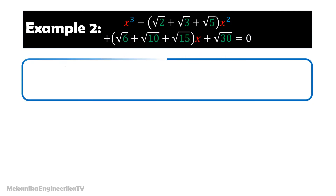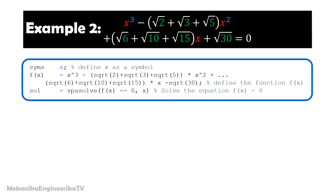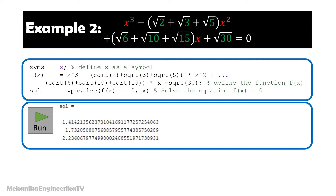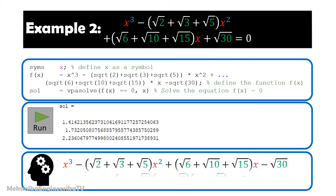As a second example, we are going to solve the cubic equation shown here. The code is almost the same, except for the definition of f(x). Here f(x) equals x cubed minus (square root of 2 plus square root of 3 plus square root of 5) times x squared, plus (square root of 6 plus square root of 10 plus square root of 15) times x, minus square root of 30. It is worth noting that no initial value was given, as this is a polynomial equation. Running the code gives three solutions corresponding to square root of 2, square root of 3, and square root of 5 respectively. This also corresponds to the theoretical solutions of the cubic equation.